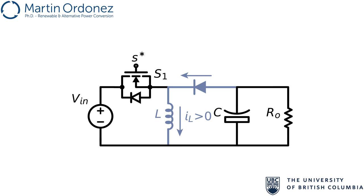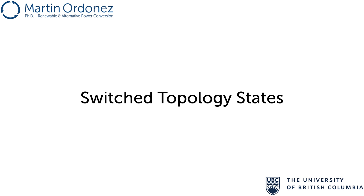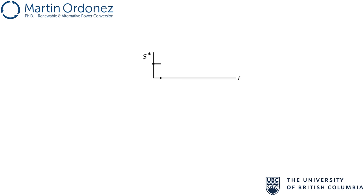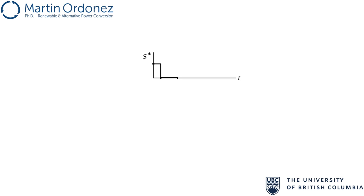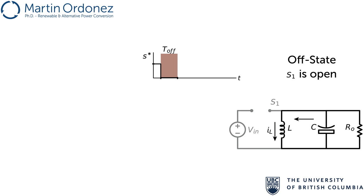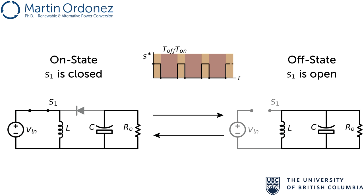This switch topology under continuous conduction mode has two different states. When the control signal S is high, the controllable switch S1 is turned on and connects the input voltage to the inductor, creating a current flow. This is maintained during a period of time called on time, T_on, after which the control signal S changes to a low state, which causes the switch S1 to turn off and forces the diode to carry the inductor current. This is maintained during a period of time called off time, T_off.